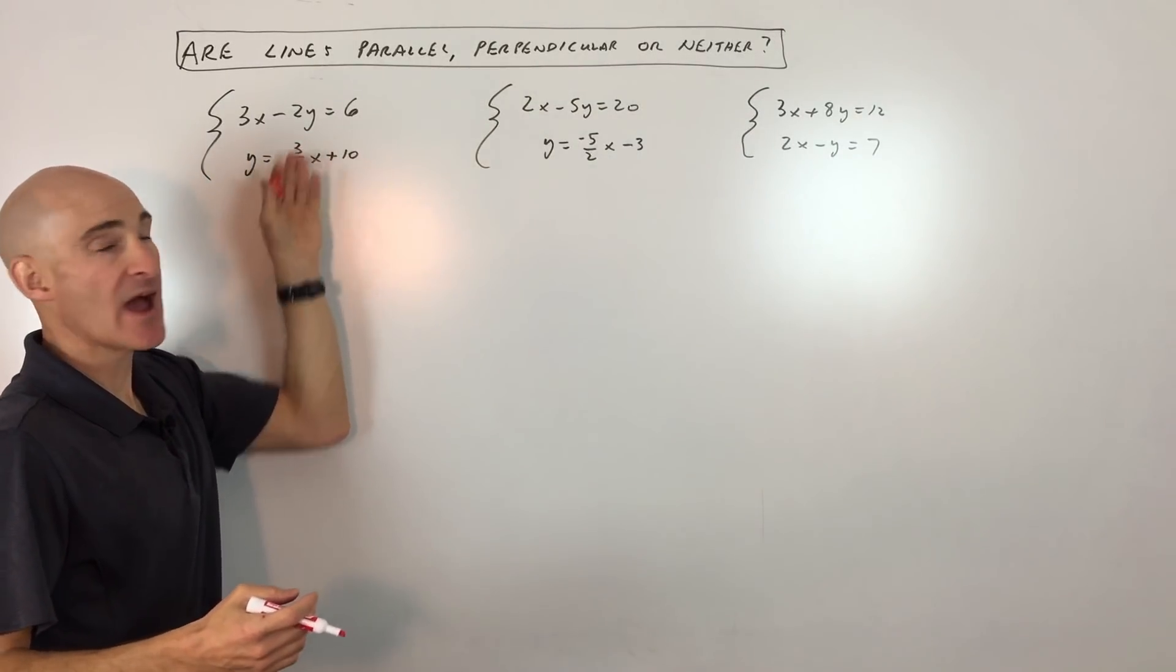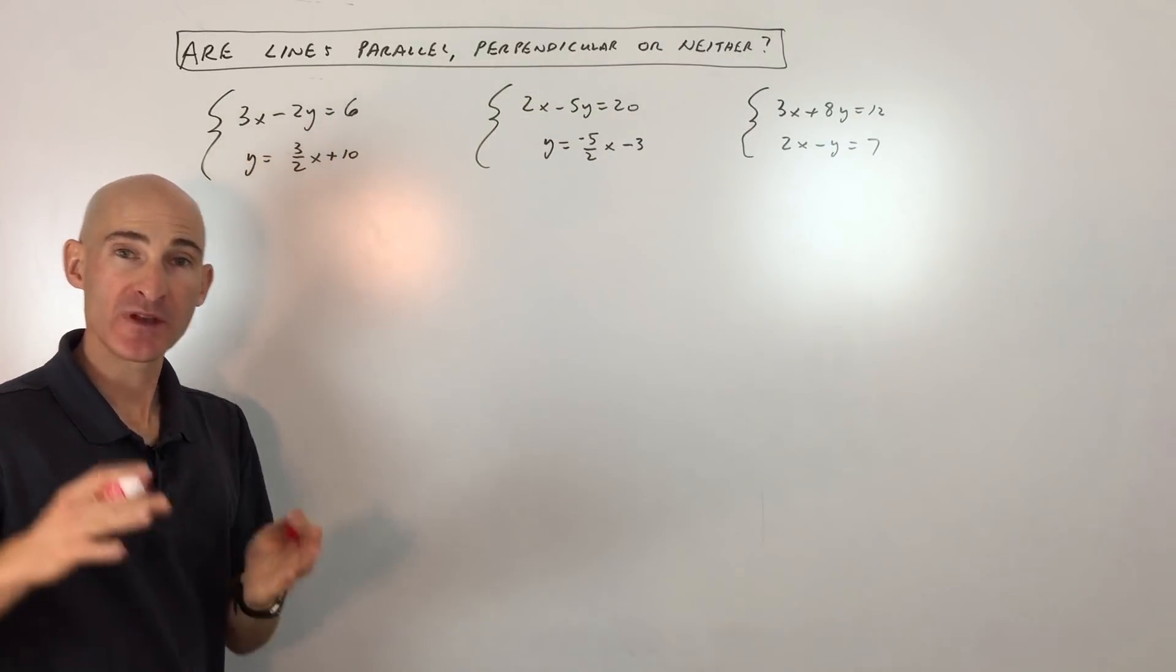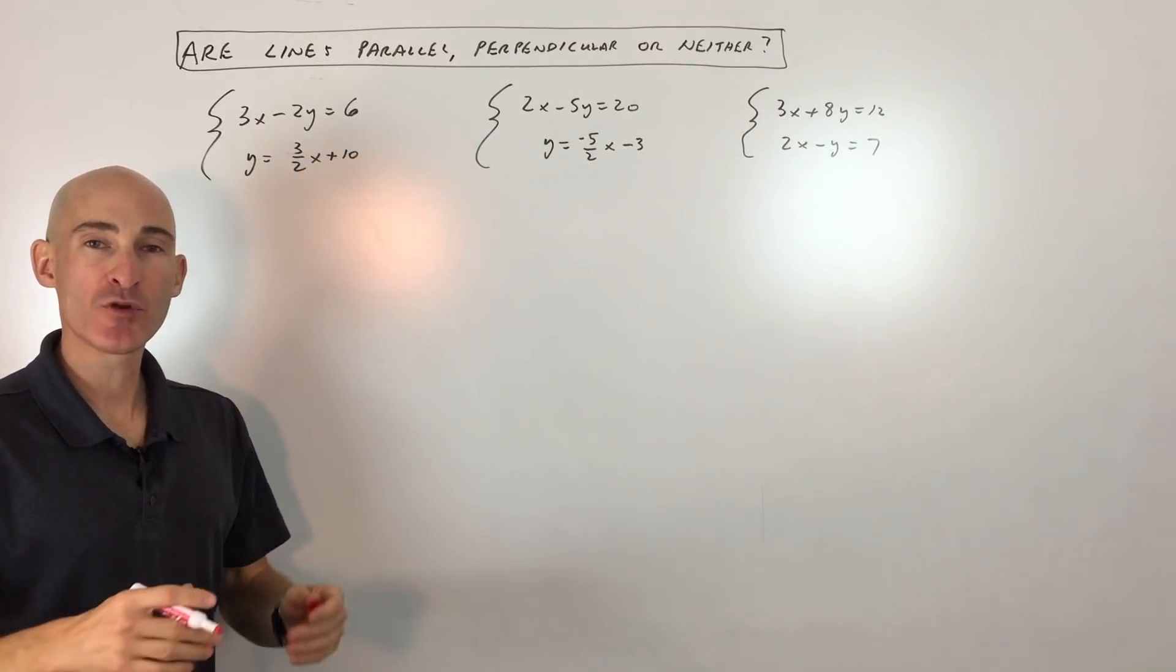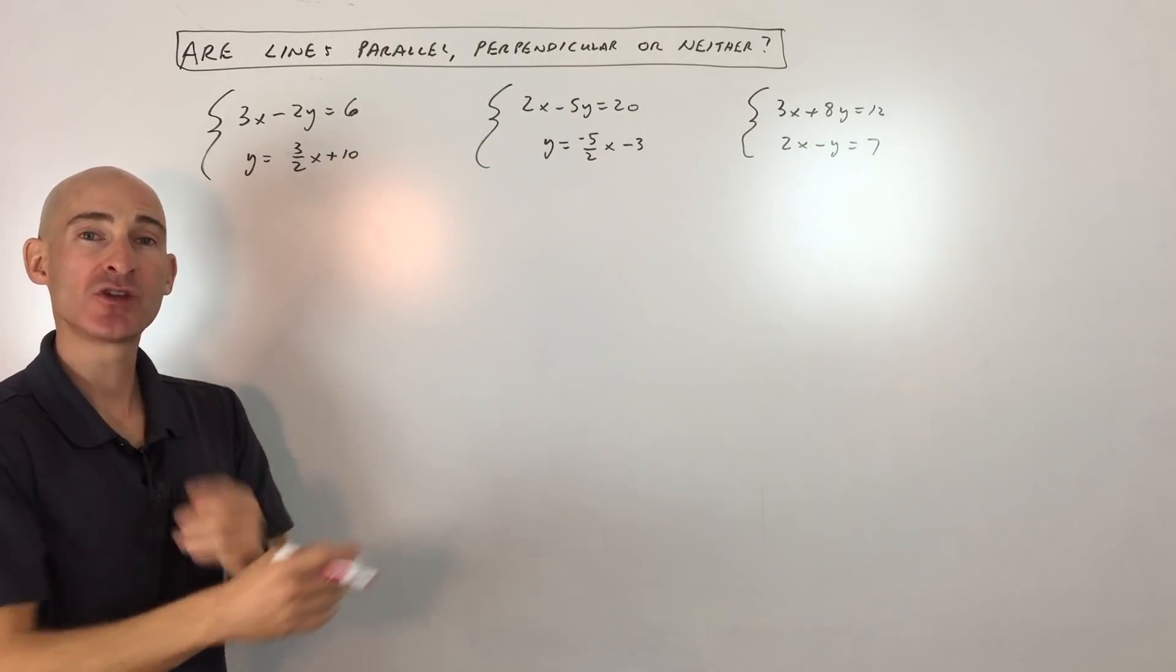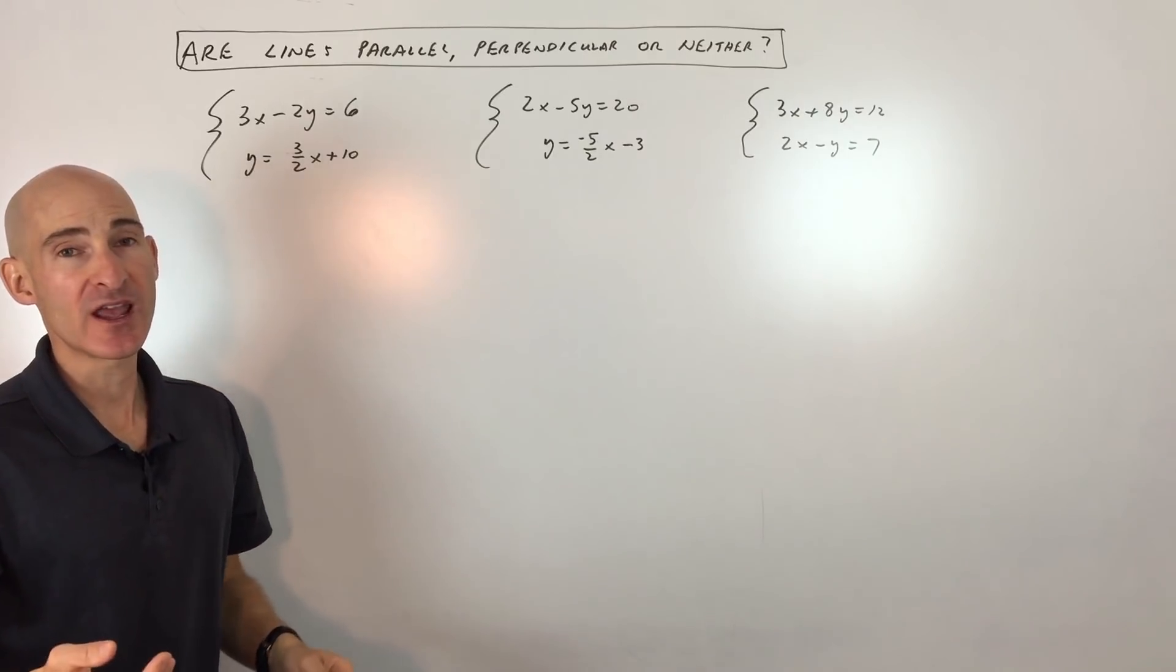Say they give you two equations of lines and they ask you, are they parallel, meaning that they don't cross? Are they perpendicular, meaning they cross at right angles? Or are they neither, meaning they cross but not at a right angle?